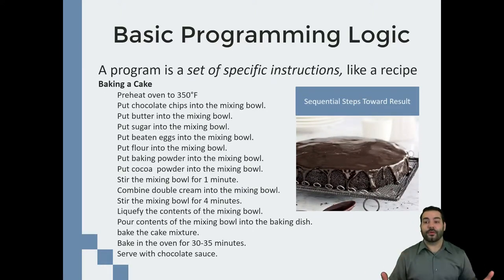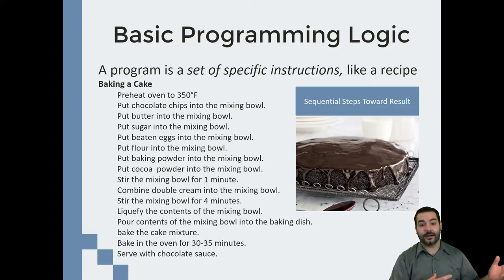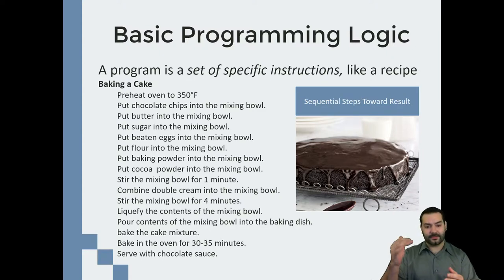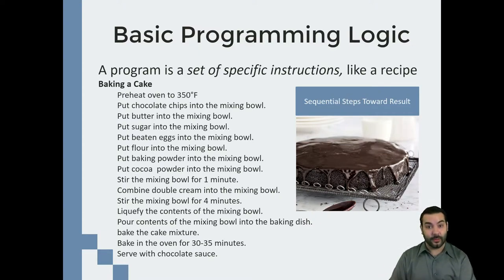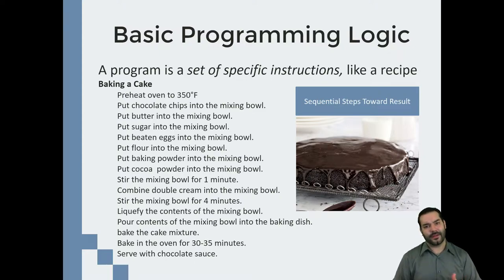Just a little bit of basic programming logic. If we think about programming for a second, all we're doing is telling the computer to do a specific set of instructions — which is no different than baking a cake. Turn on the oven, mix some chocolate, put in the butter, sugar, eggs, flour, mix wet and dry ingredients, stir for a set amount of time, bake for 30 to 35 minutes, and then serve with a chocolate sauce. We have to think about that set of instructions.